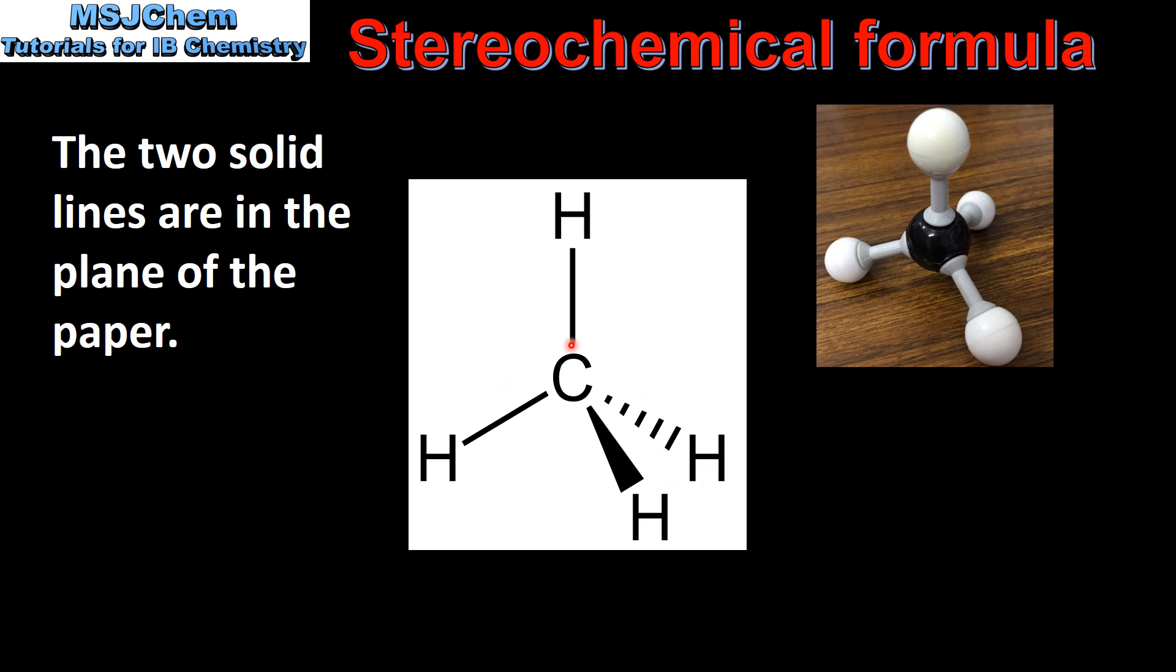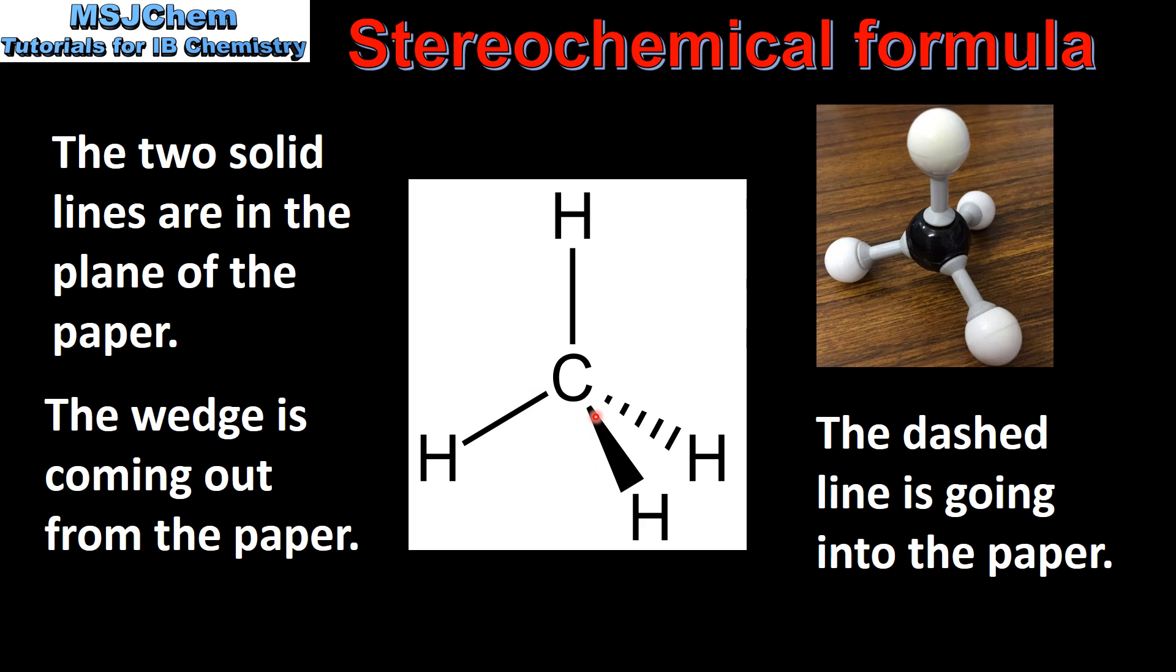In the stereochemical formula, the two solid lines represent bonds that are in the plane of the paper. The wedge is used to represent a bond coming out from the paper. And the dashed line represents a bond going into the paper.